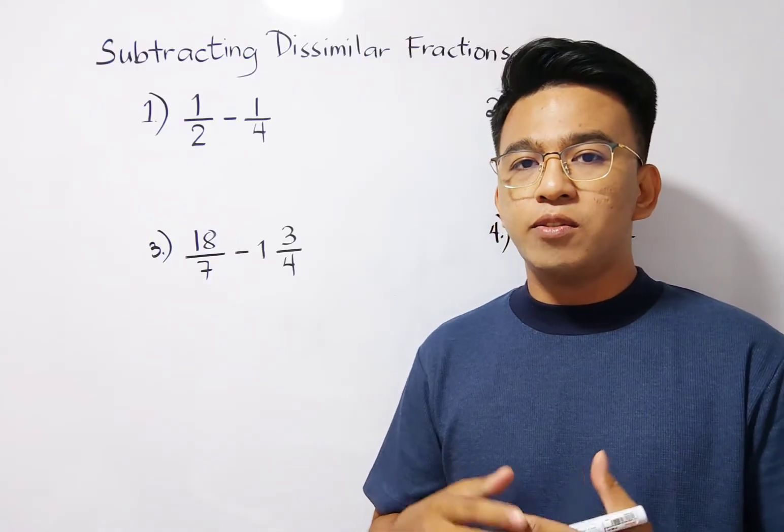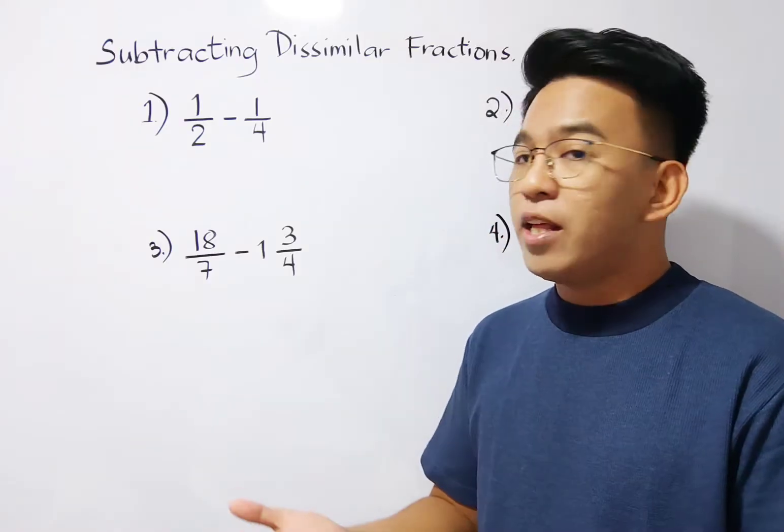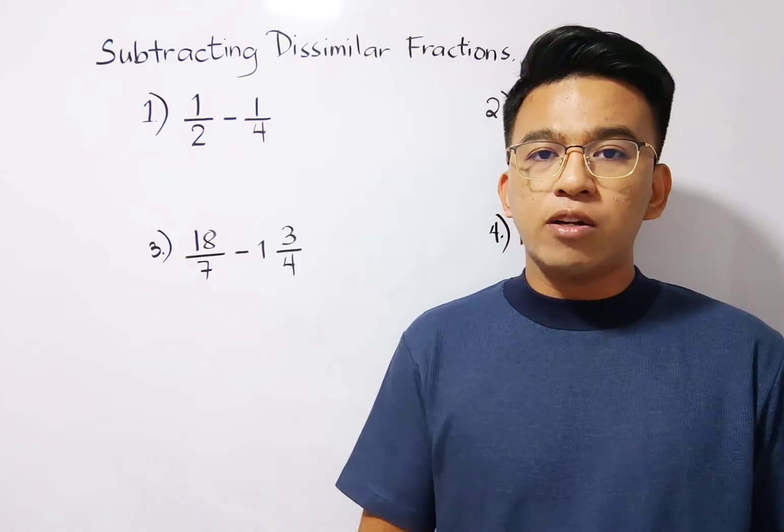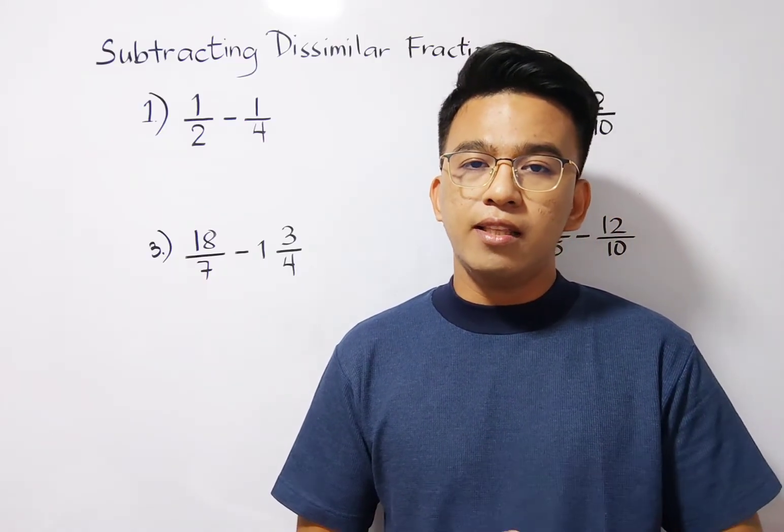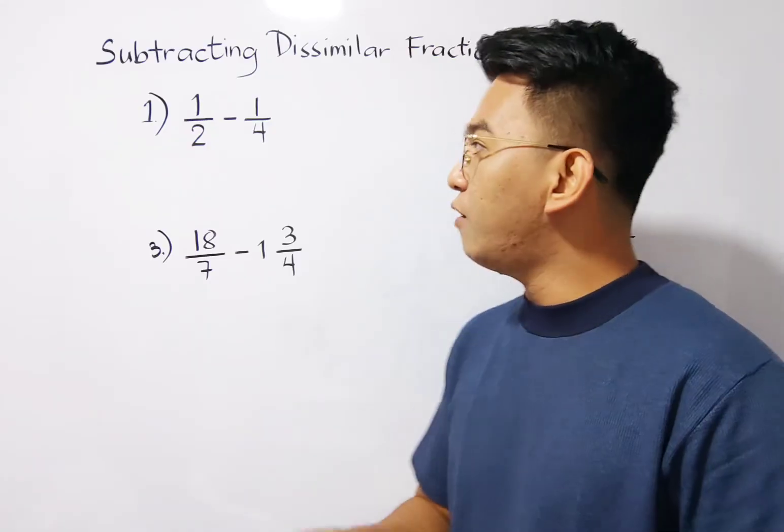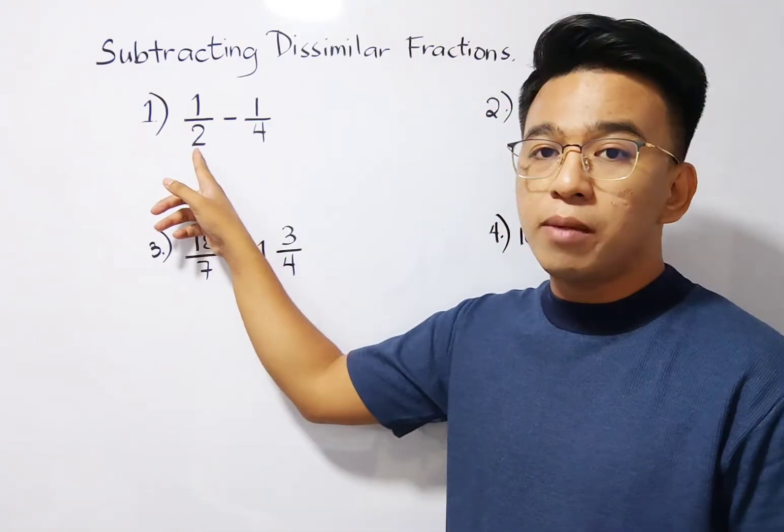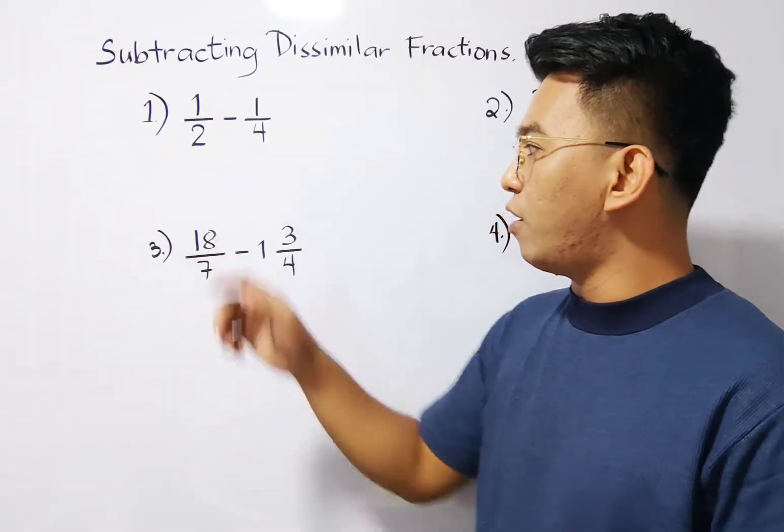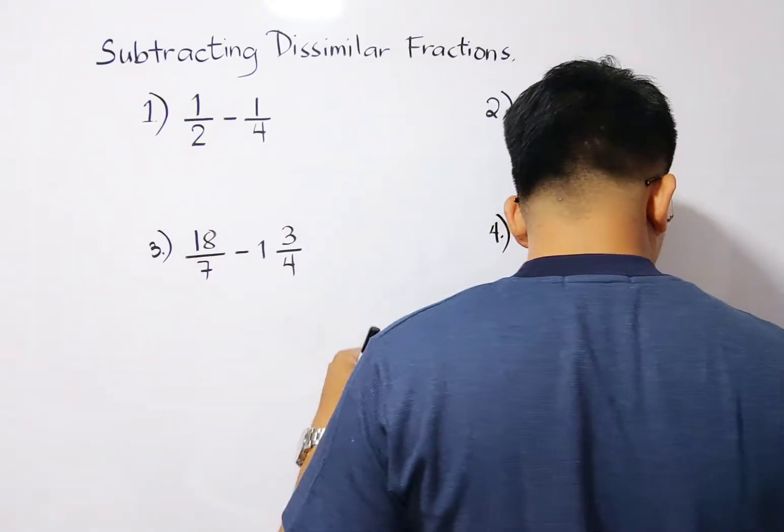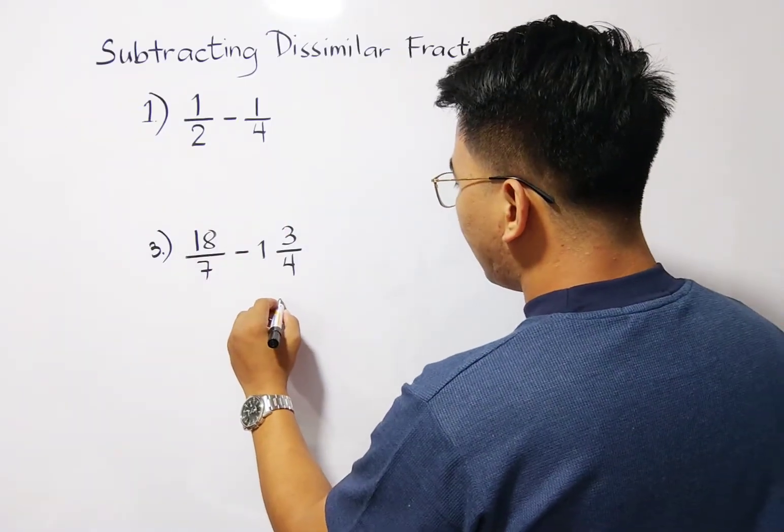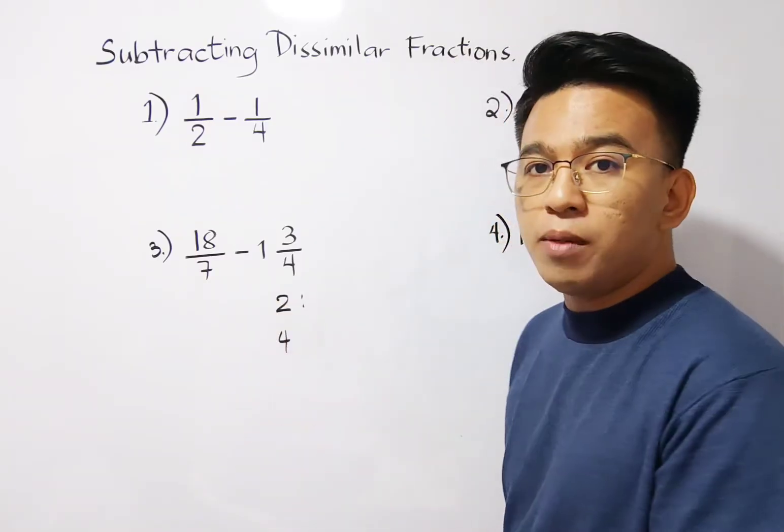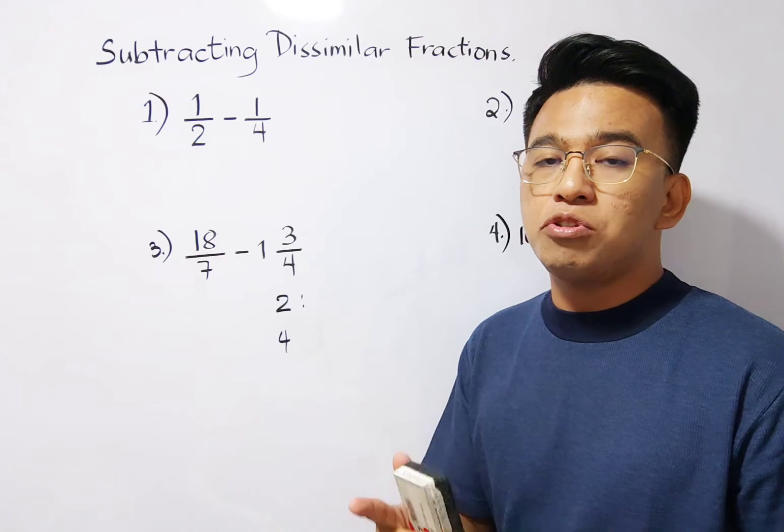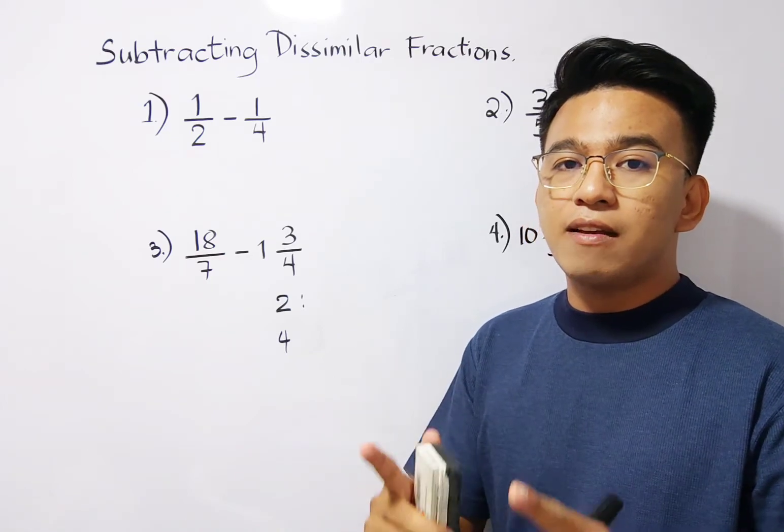First step is to make the denominators the same. In other words, we need to find the least common denominators. And the classical way on how to do that is to find the least common multiples of 2 and 4. To get the least common multiples of 2 and 4, you need to list down 2 and 4 and find all the multiples of it. But we need to choose the smallest value of it.